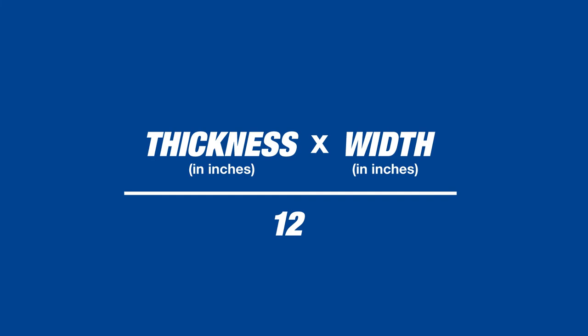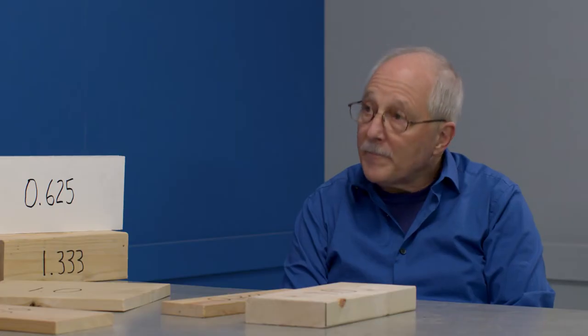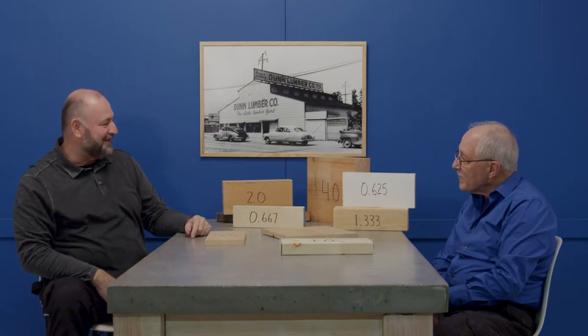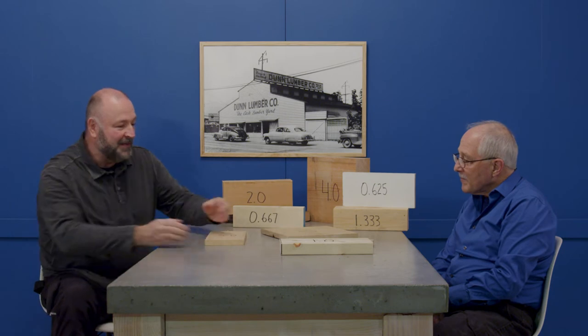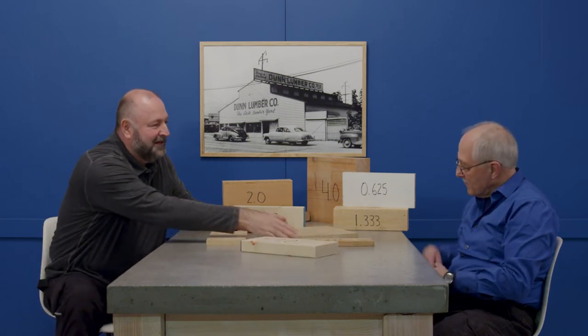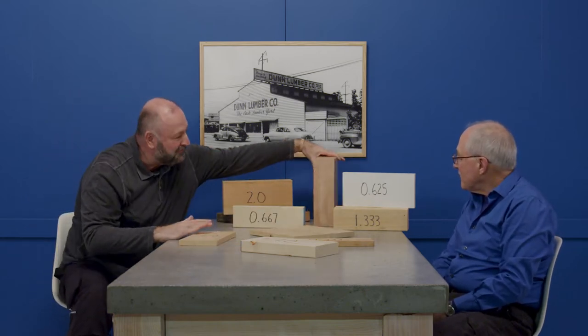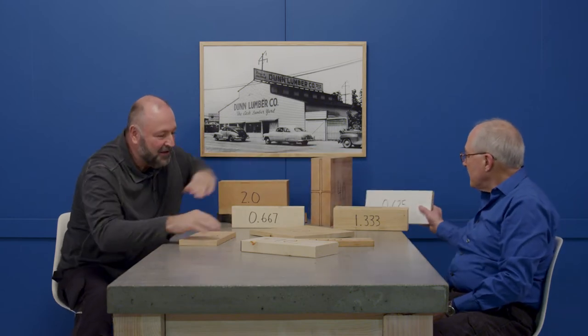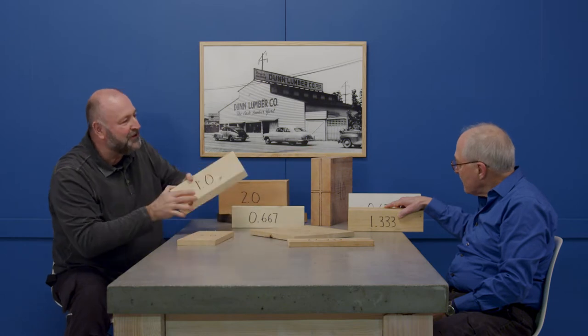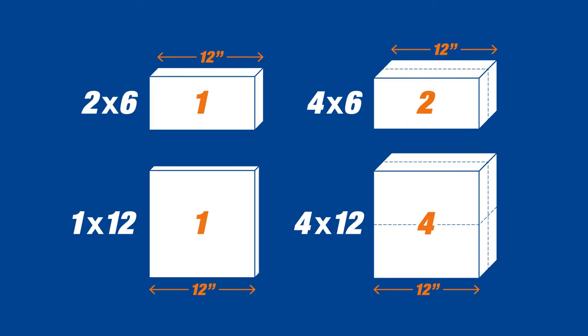Figuring it out is basically thickness times width divided by 12 for a 12-inch piece — that was always the easiest way for me to think about it. Another trick: a 2×6 is one board foot, a 1×12 is one, a 4×6 is two, a 4×12 is four. You can even cut that up and see four chunks of 2×6 in there. But you always have to be ready to fall back on the formula or pull out your phone app.